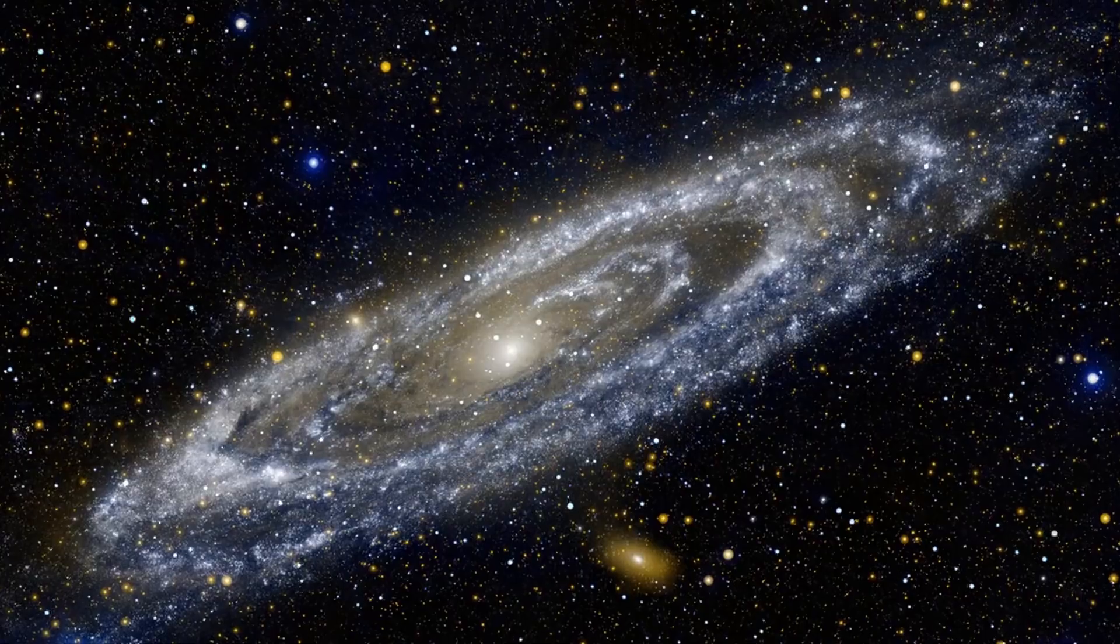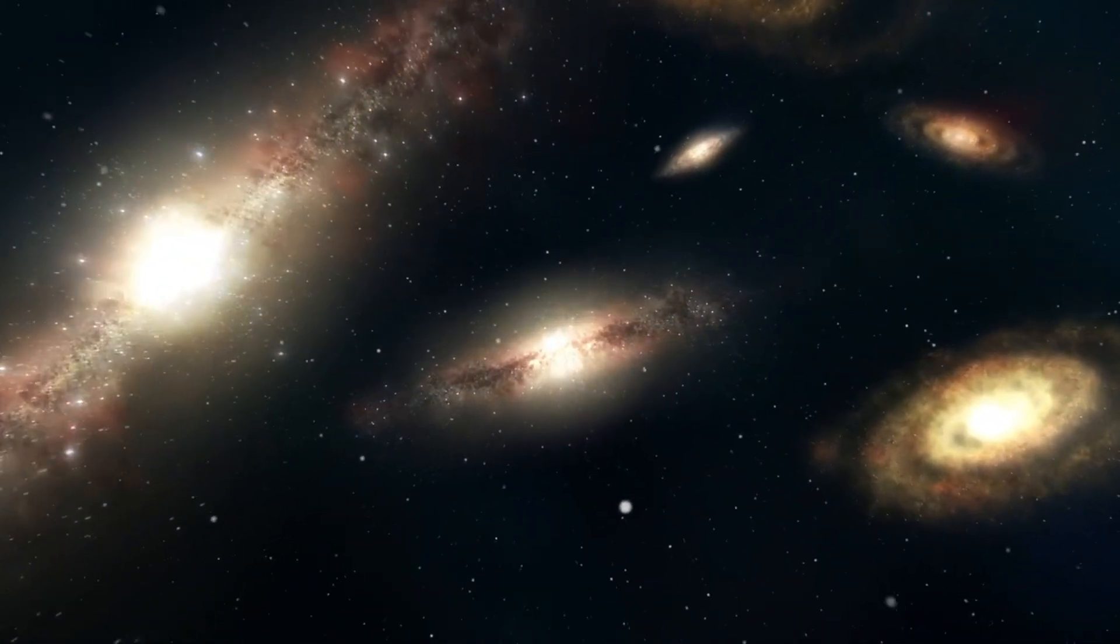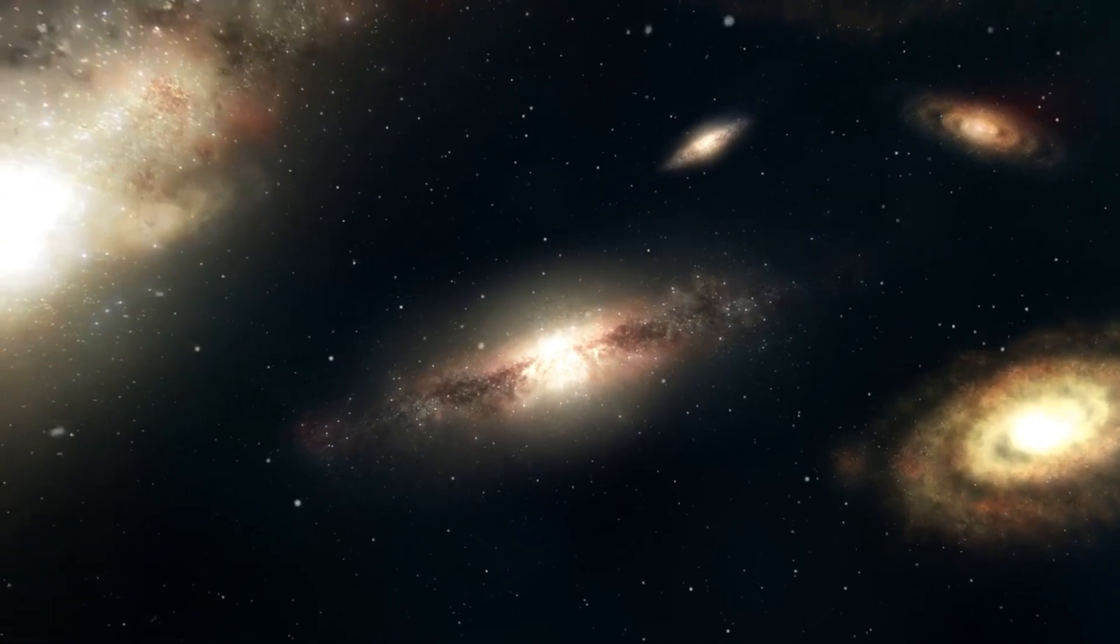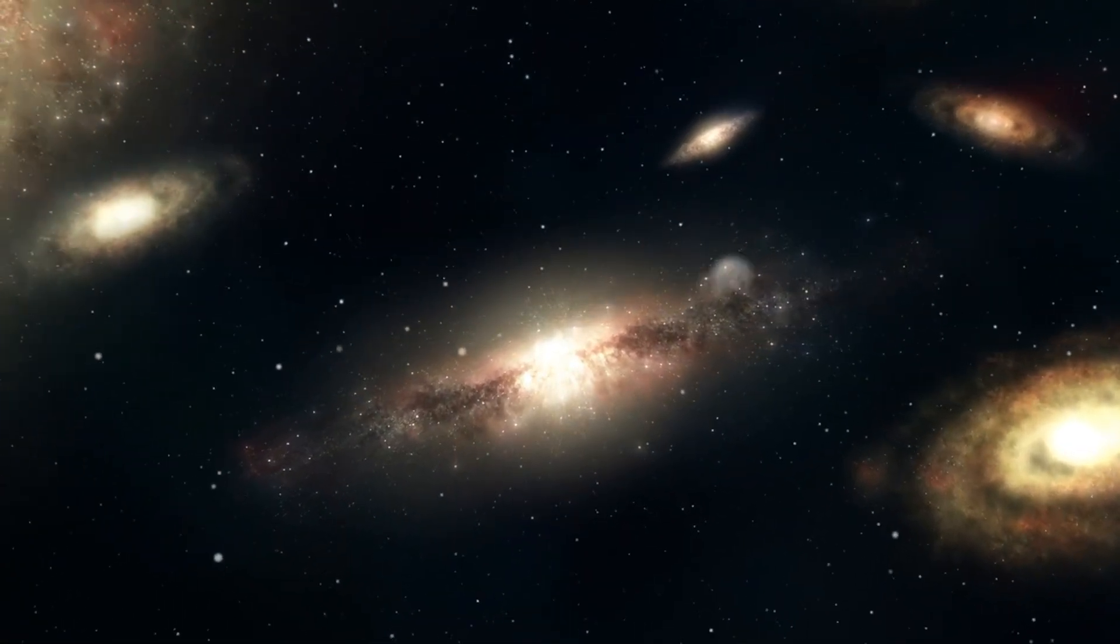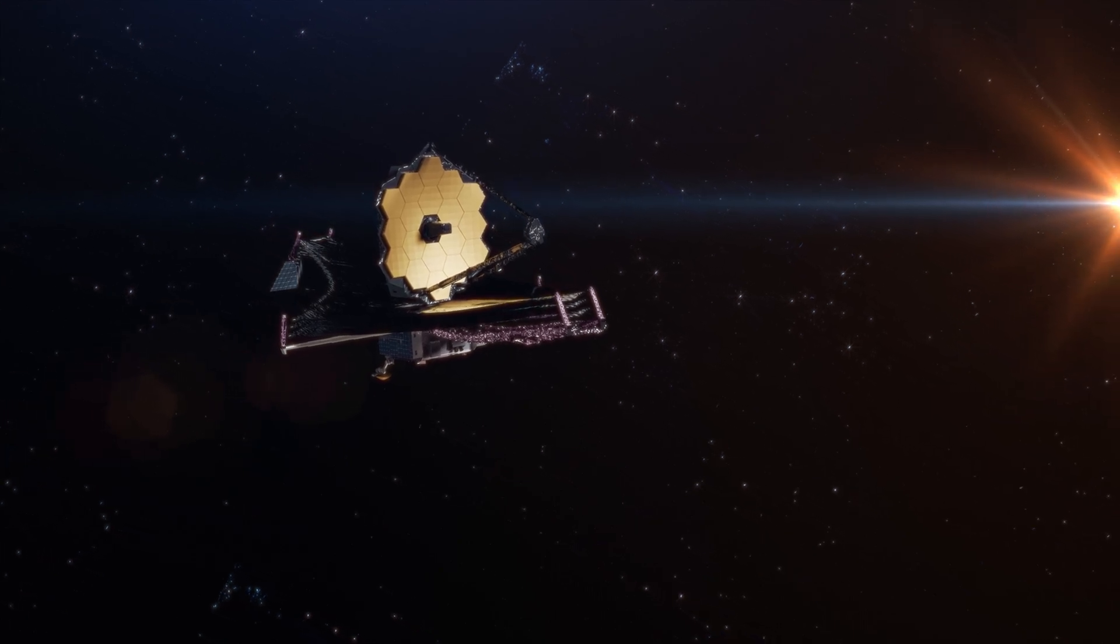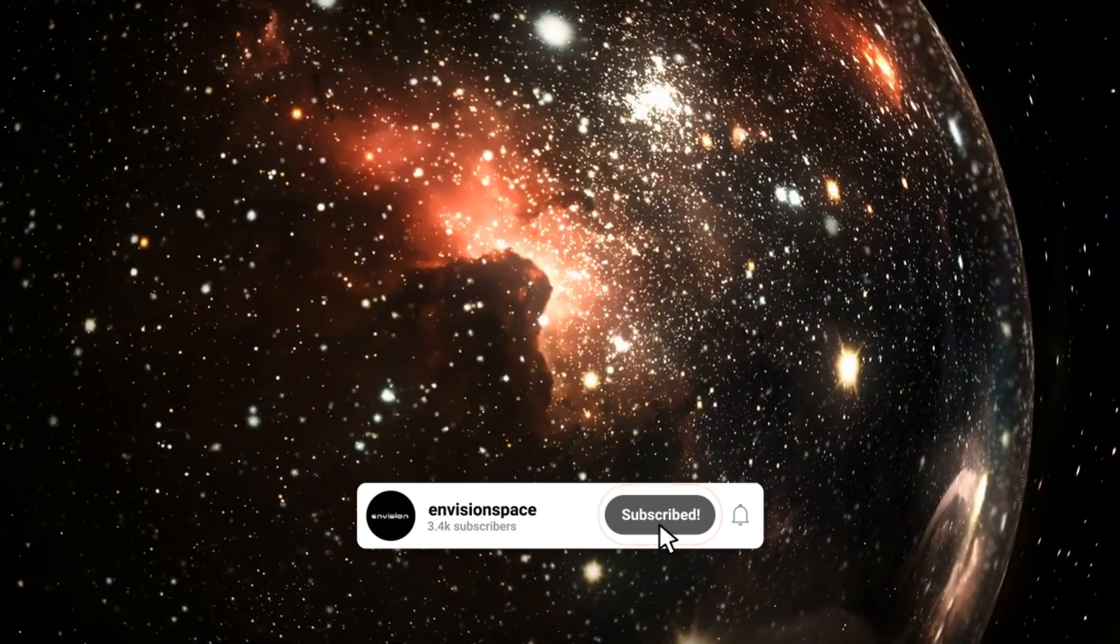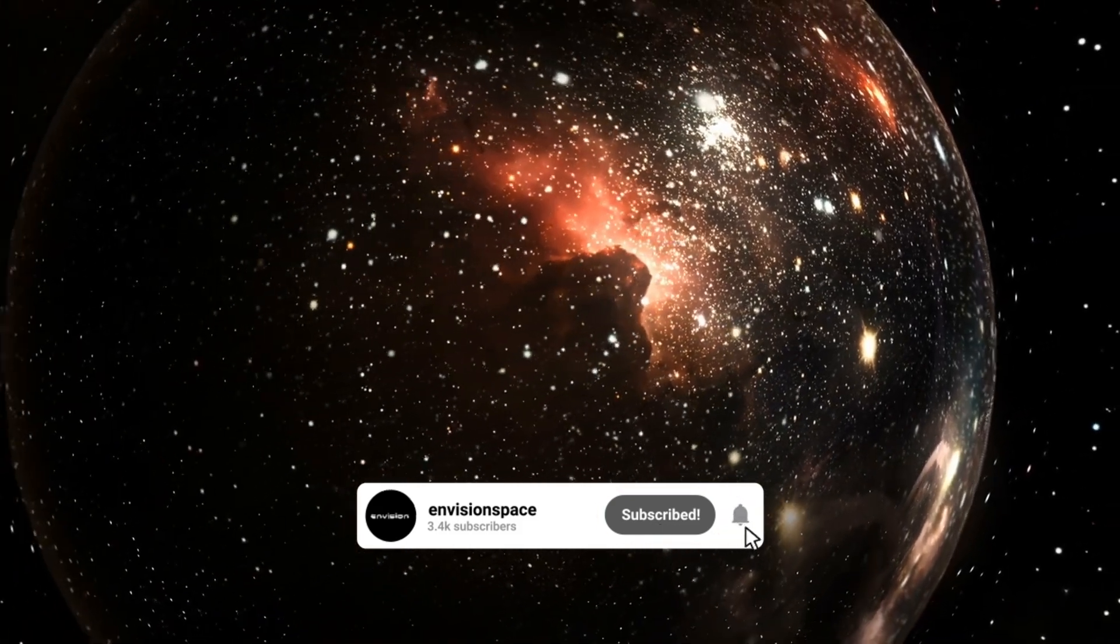This galaxy is located behind a massive cluster of galaxies, which acts as a natural telescope and amplifies the light of the Firefly Sparkle galaxy by a factor of 10. Webb observed it at redshift of z equal to 8.3, which means that the light we see from it left the galaxy when the universe was only about 600 million years old. This is a very early epoch in the history of the universe when the first stars and galaxies were starting to form.